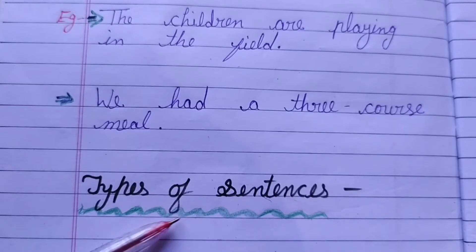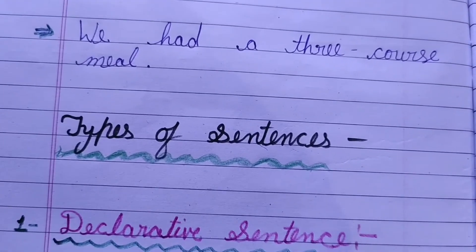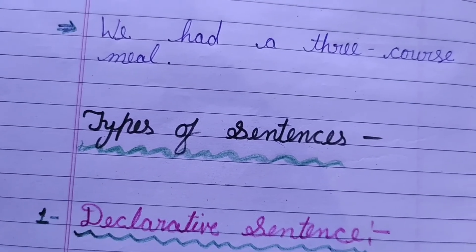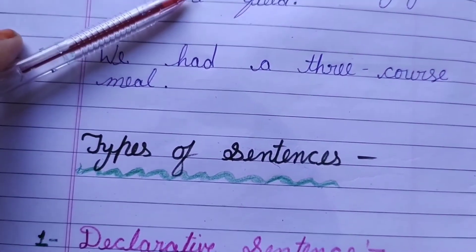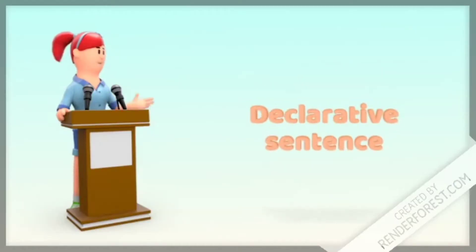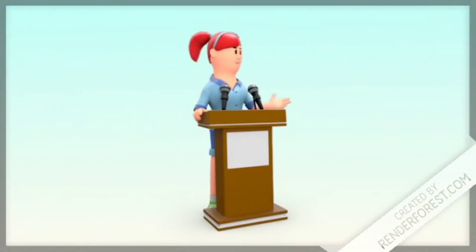Type of sentence. So, types of sentence. Number one, declarative sentence. Declarative sentence is a statement that provides some information. So, declarative sentence. In this, you have affirmative or negative. Declarative sentence, two types: affirmative and negative, both.